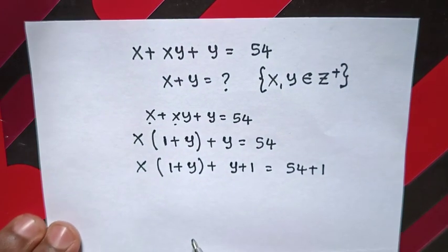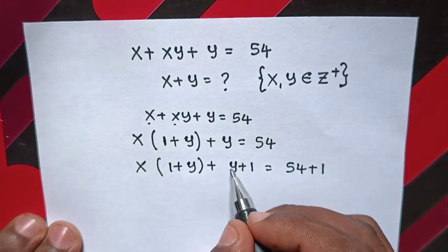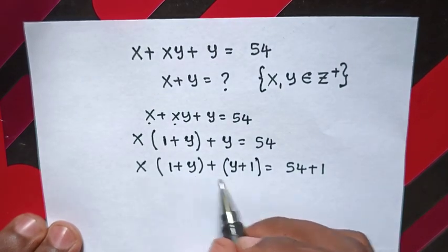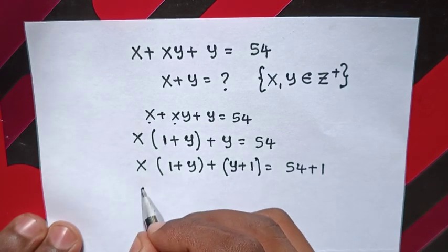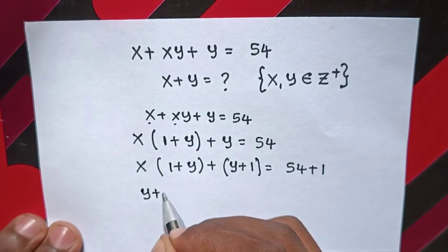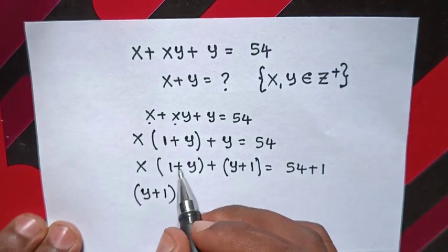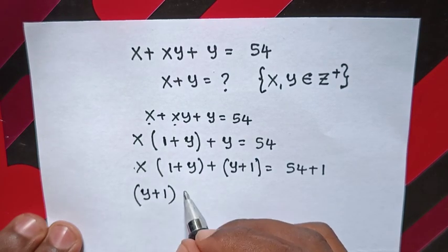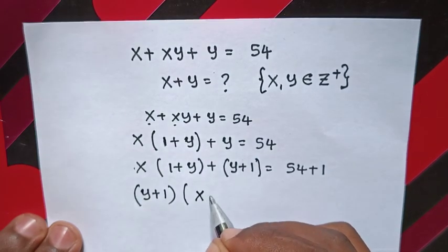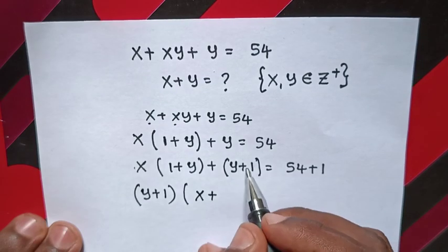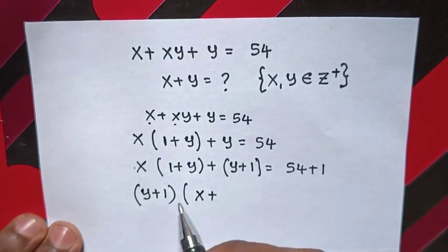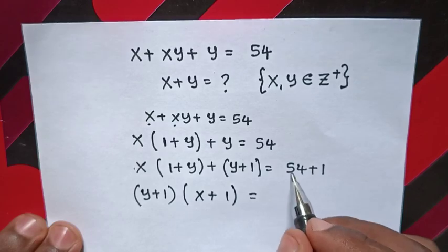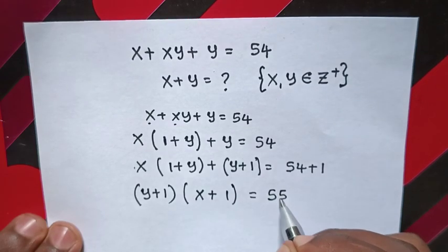Then, from here inside the bracket we have (1 plus y), and here (y plus 1). We take (y plus 1) out of the bracket, so this gives us (y plus 1) times (x plus 1) equals 55.